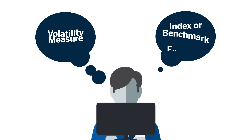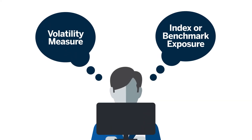Beta is both a measure of volatility as well as a term that describes exposure to a benchmark or index, such as the S&P 500. It expresses the relative volatility of a stock relative to the market — in this case, the S&P 500.